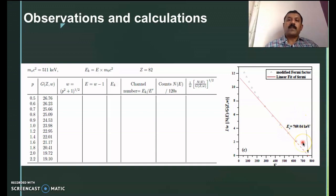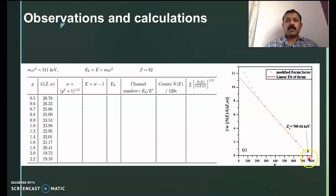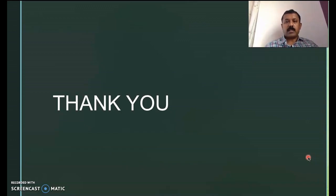This is how you find the endpoint energy of beta particles using the Fermi-Curie plot. There are various methods to determine this endpoint energy — such as the half-thickness method and the nomogram method — but the Fermi-Curie plot is considered one of the more accurate methods. Thank you for watching.